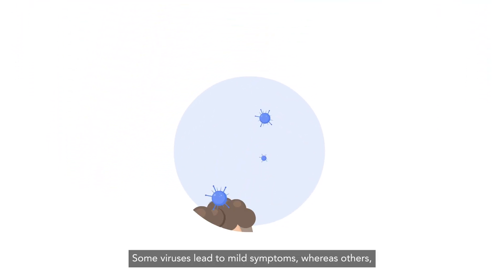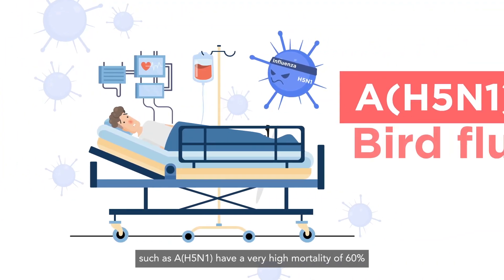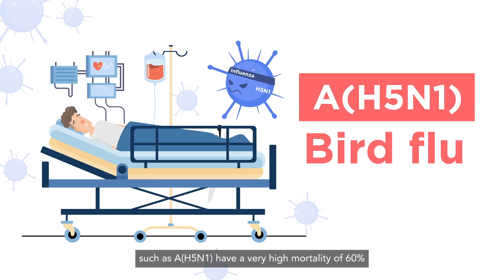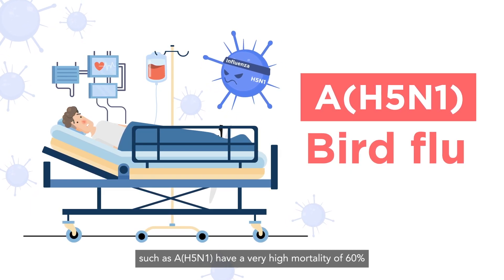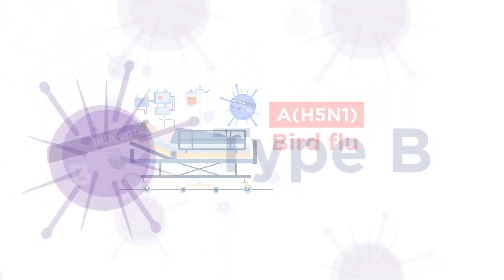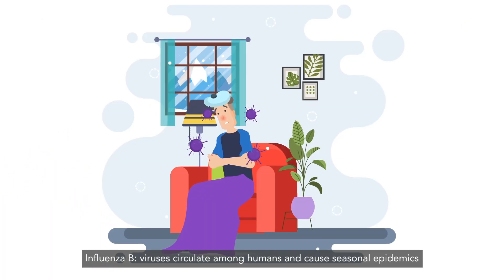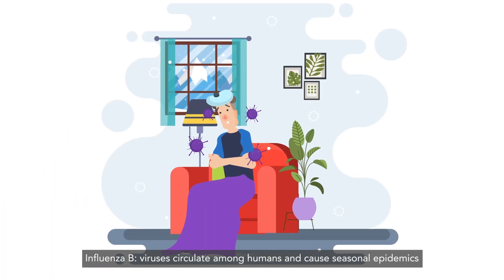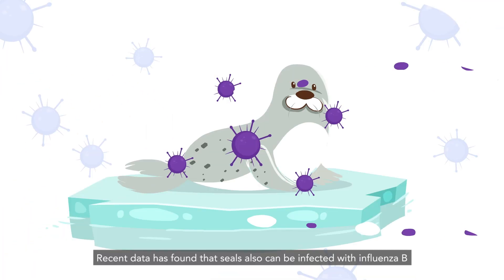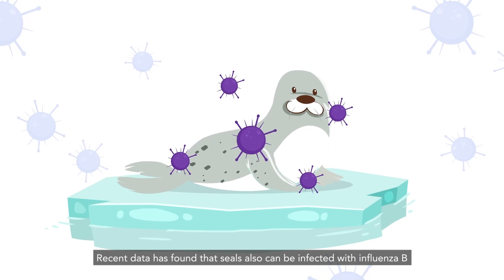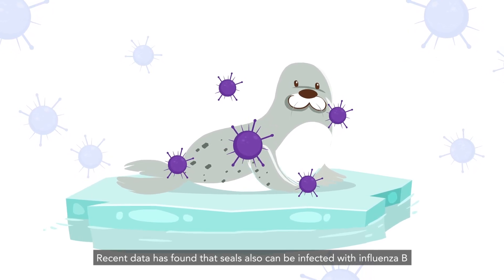Some viruses lead to mild symptoms, whereas others such as A H5N1 have a very high mortality of 60%. Influenza B viruses circulate among humans and cause seasonal epidemics. Recent data has found that seals also can be infected with influenza B.